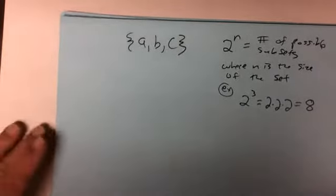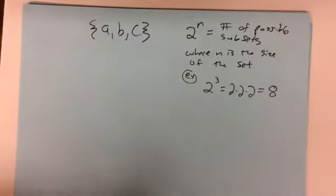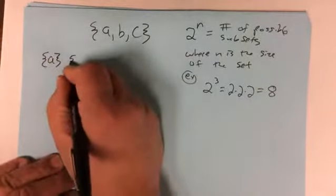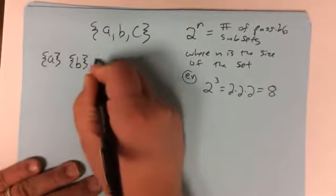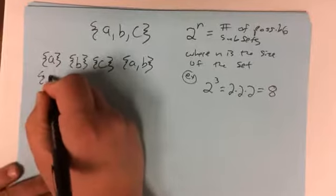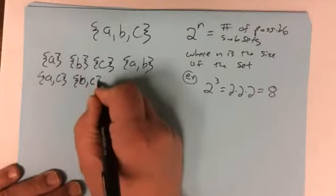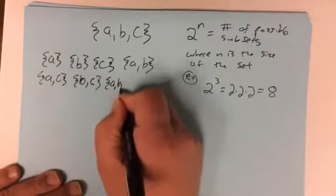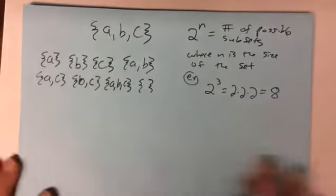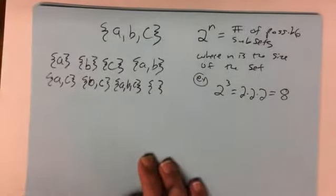Here are all 8 subsets of {A, B, C}: {A}, {B}, {C}, {A, B}, {A, C}, {B, C}, {A, B, C}, and the empty set. That's 1, 2, 3, 4, 5, 6, 7, 8 — all the subsets.